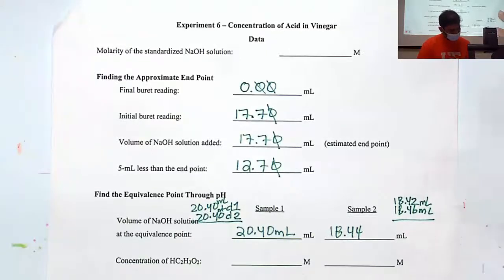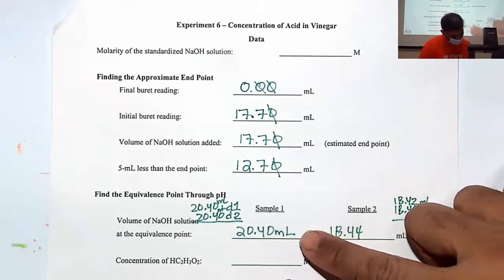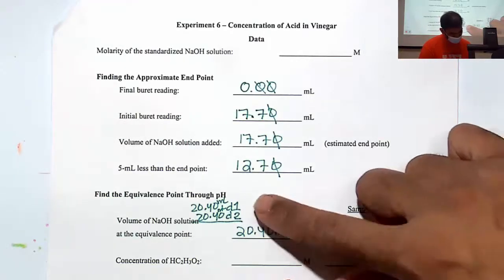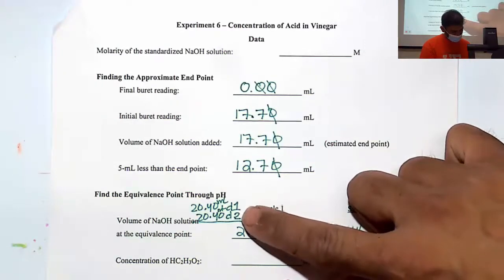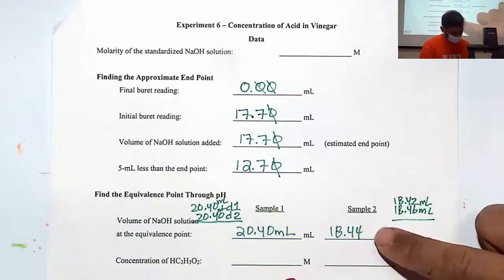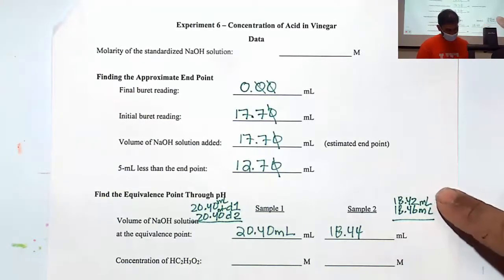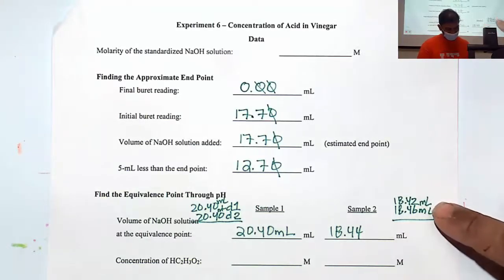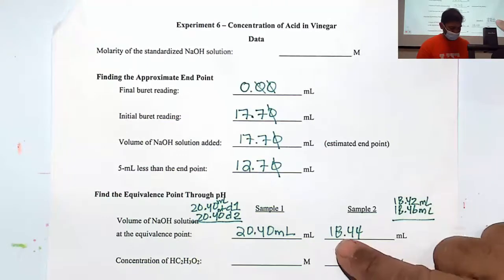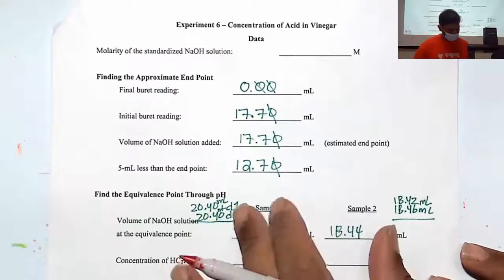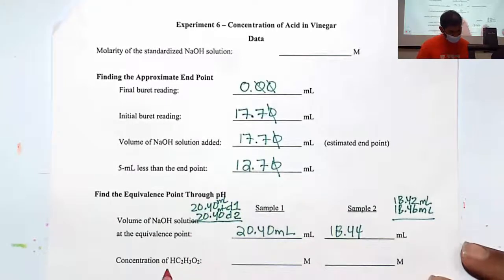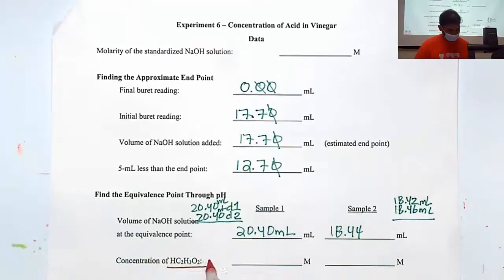Here's our data from the titration readings. The first equivalence point was 20.40 mL — we took the average of the first derivative and second derivative values. In our duplicate sample, we got an equivalence point of 18.44 mL, which is the average of D1 (18.42) and D2 (18.46 mL). So from this data we have two samples.